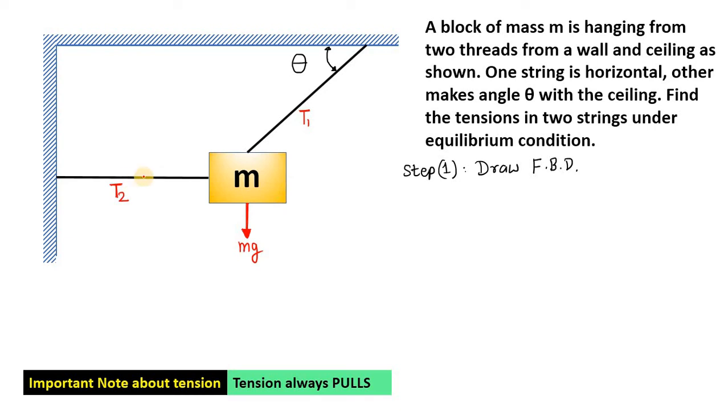So, how does this left thread pull the block? It will pull in the left-ward direction. So, the direction of force exerted by the horizontal thread would be in the left-ward direction as shown and also the direction of tension will be along the thread. Similarly, this upper thread will also pull the block along this theta direction with the tension T1.